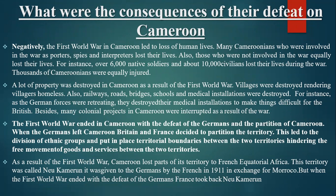Moving to the third part — the consequences of the defeat of the Germans on Cameroon. Starting with negative consequences: the First World War in Cameroon led to the loss of human lives. Many Cameroonians involved in the war as fighters, spies, and interpreters lost their lives. Those not directly involved equally lost their lives. For example, over 6,000 native soldiers and about 10,000 civilians lost their lives during the First World War, and thousands more were injured.